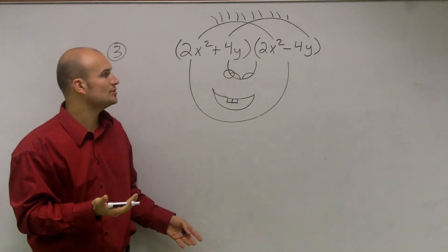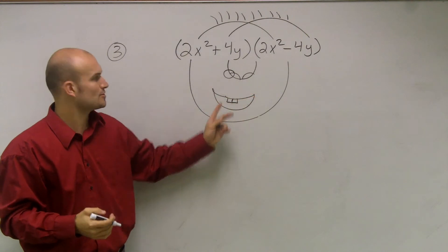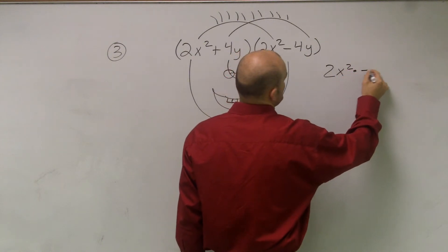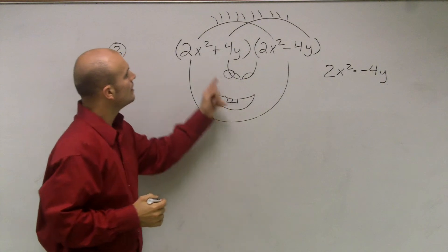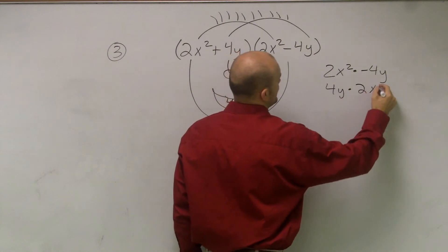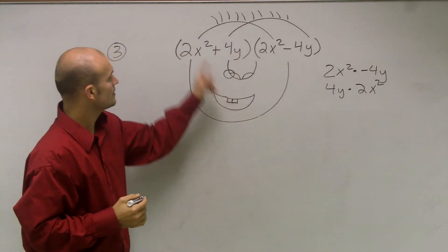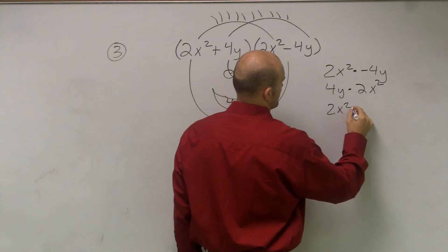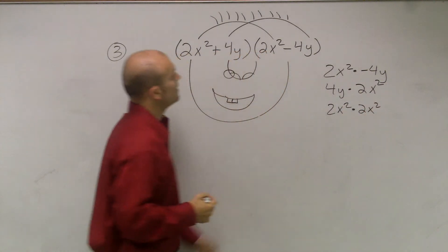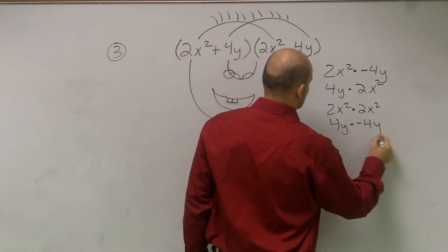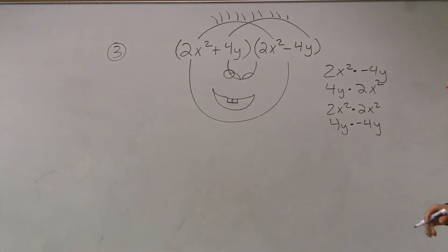So now, ladies and gentlemen, all we're really going to do is just take what we're connecting and have that multiply. So if I'm multiplying 2x² times a negative 4y — I'll just write that up. 2x² times a negative 4y. Then I can take the inside: 4y times 2x². Then I'll do the first terms: 2x² times 2x². Then I'll do the last terms: 4y times a negative 4y. So now we simply just need to determine what happens. 2x² times a negative 4y.